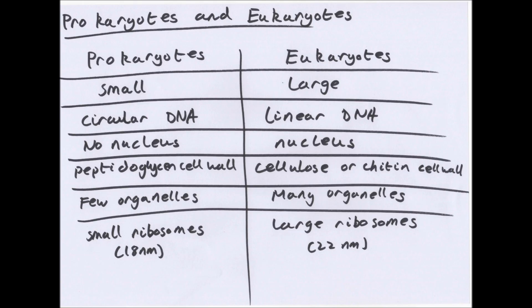Prokaryotes have few organelles and no mitochondria. They use something called mesosomes for energy production. Eukaryotes have many organelles including mitochondria. And prokaryotes have small ribosomes, 18 nanometers. Eukaryotes have large ribosomes, 22 nanometers.